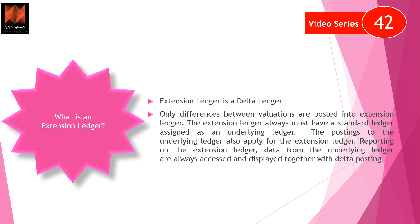Only differences between valuations are posted into the extension ledger. If there is a difference between the valuation in your leading ledger and non-leading ledger, it will go to the extension ledger. The extension ledger must always have an assigned standard ledger as its underlying ledger, and postings to the underlying ledger will also apply to the extension ledger.